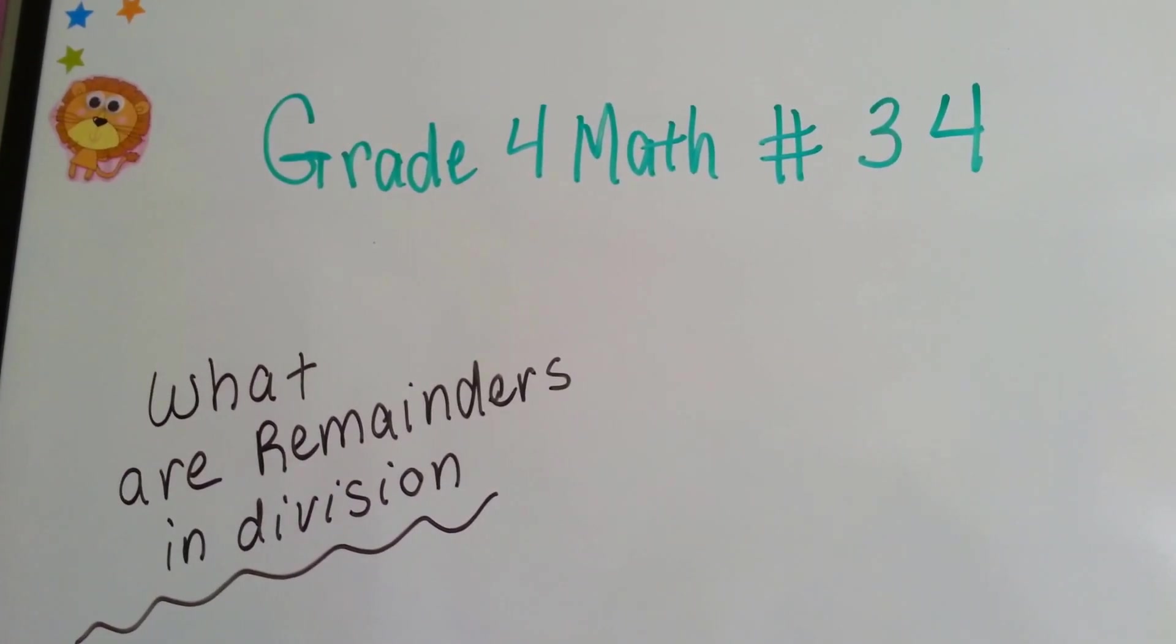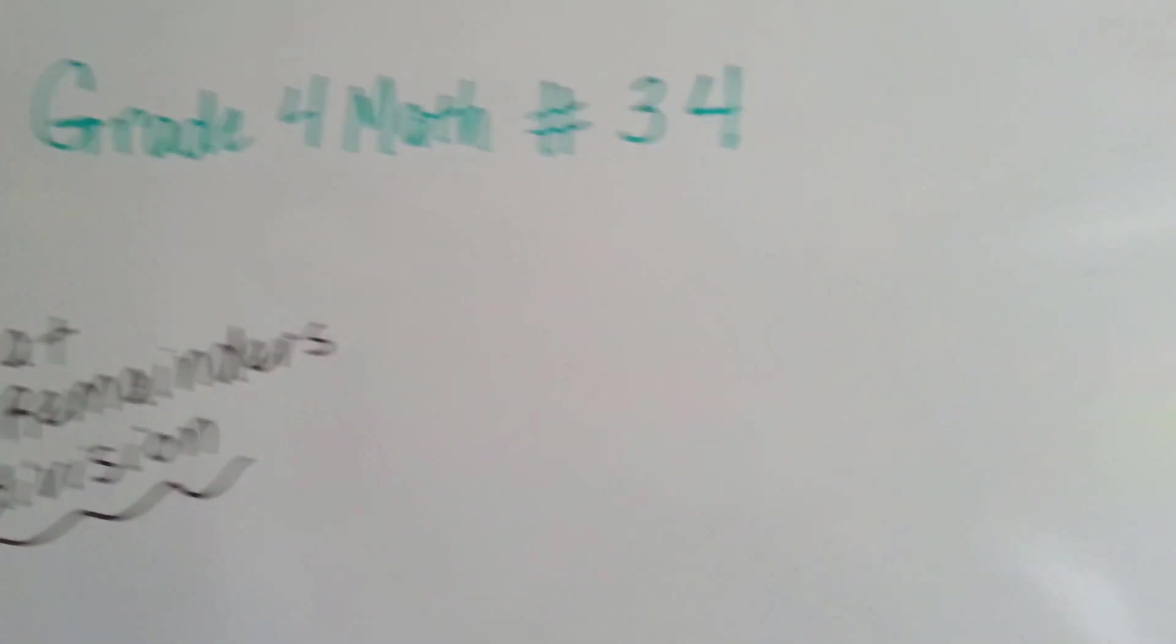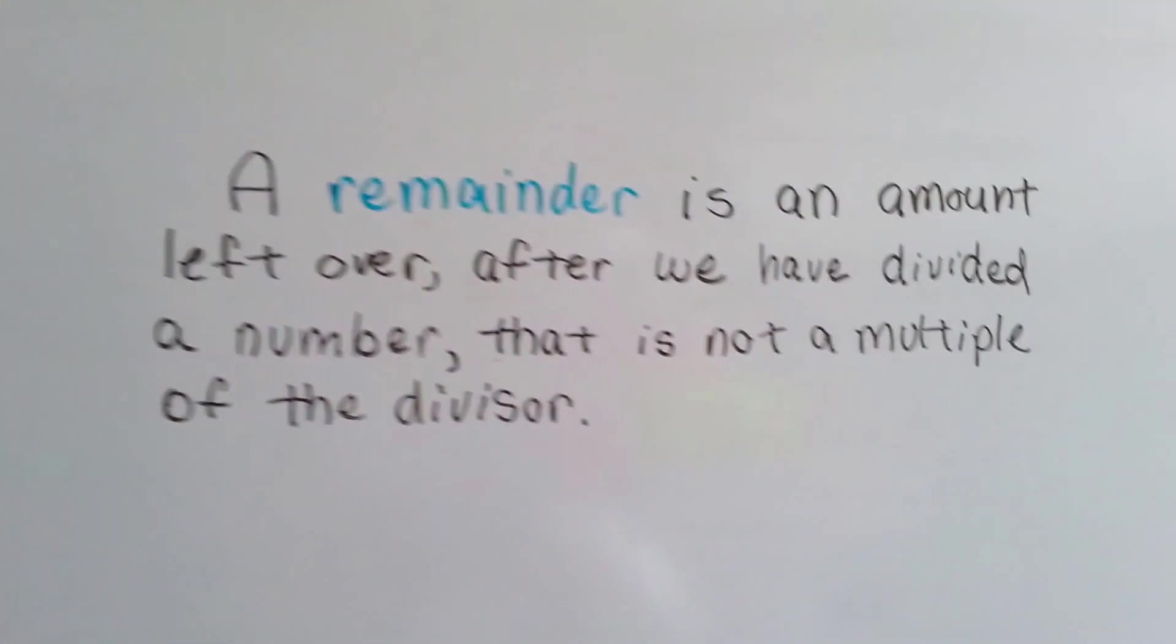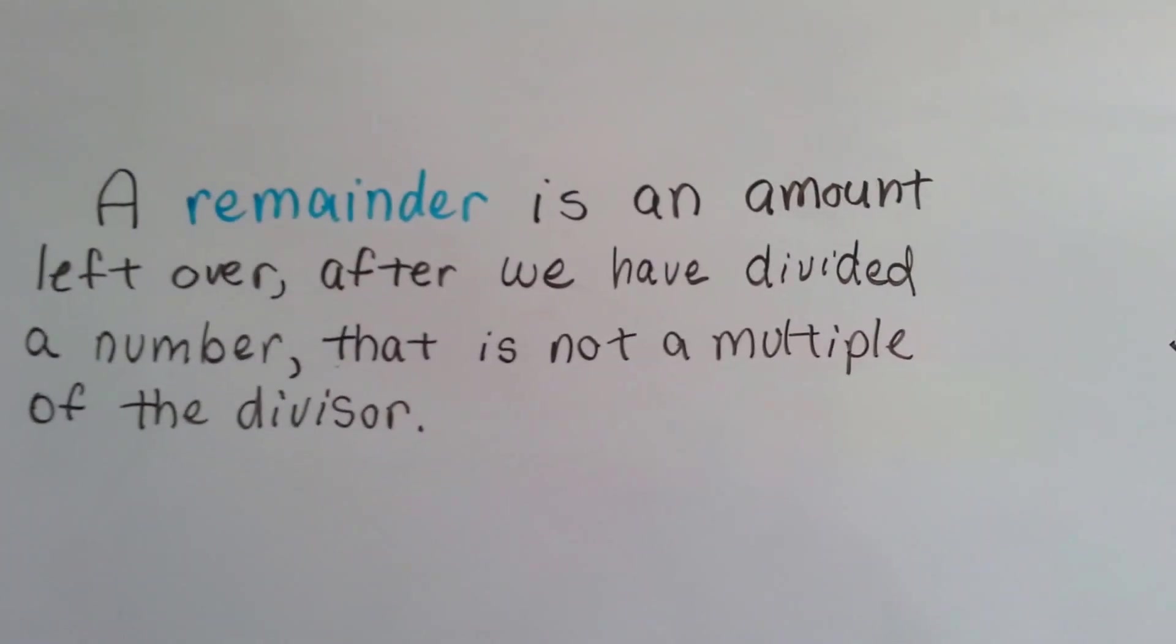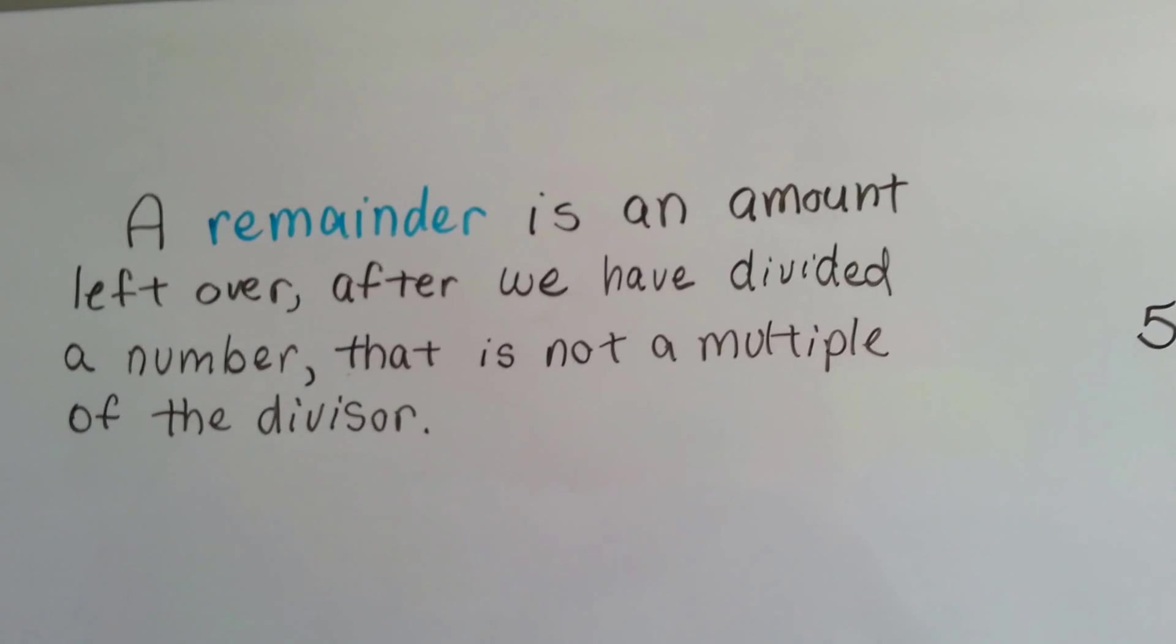Grade 4 math number 34. What are remainders in division? A remainder is an amount left over after we have divided a number that is not a multiple of the divisor.